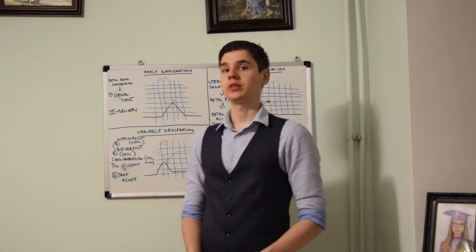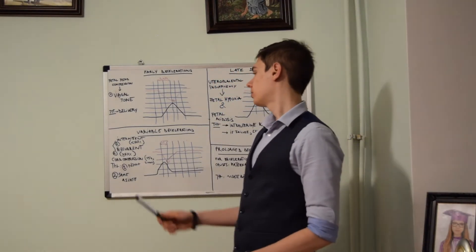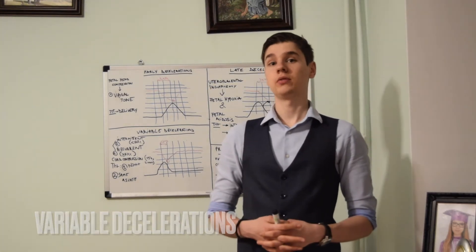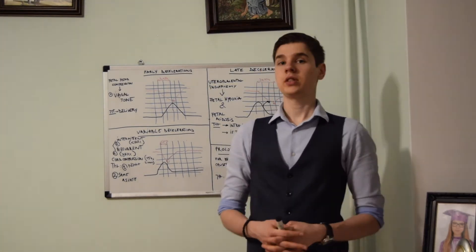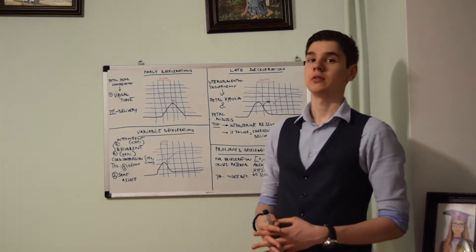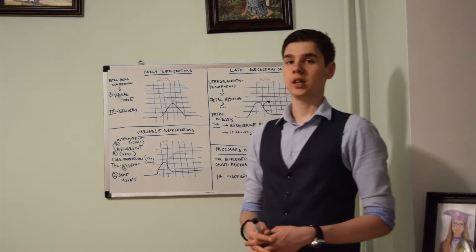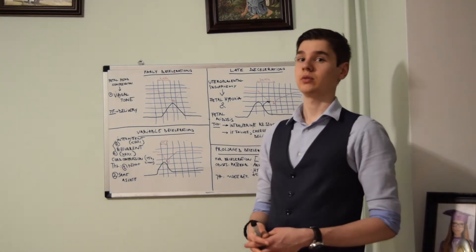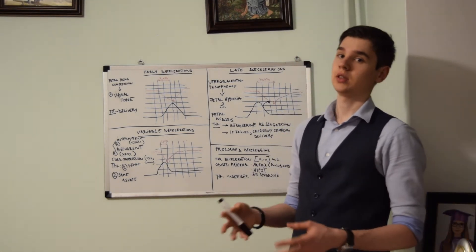The third class of decelerations are represented by variable decelerations. There are two subtypes of variable decelerations. Firstly, there are intermittent variable decelerations. In this case, less than 50% of the uterine contractions are followed by fetal heart rate deceleration.